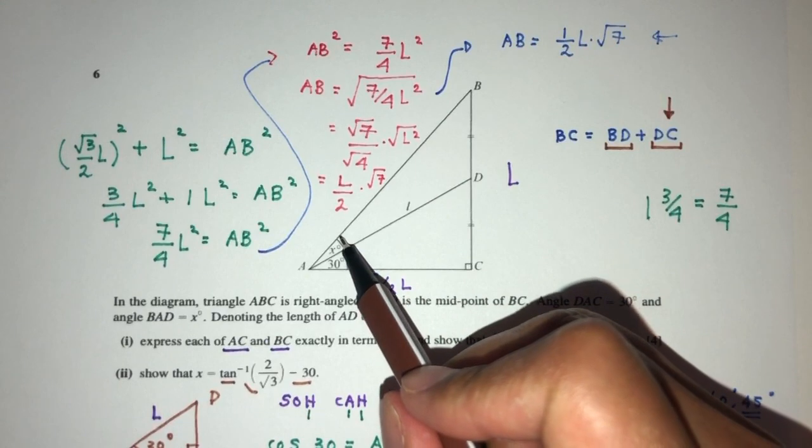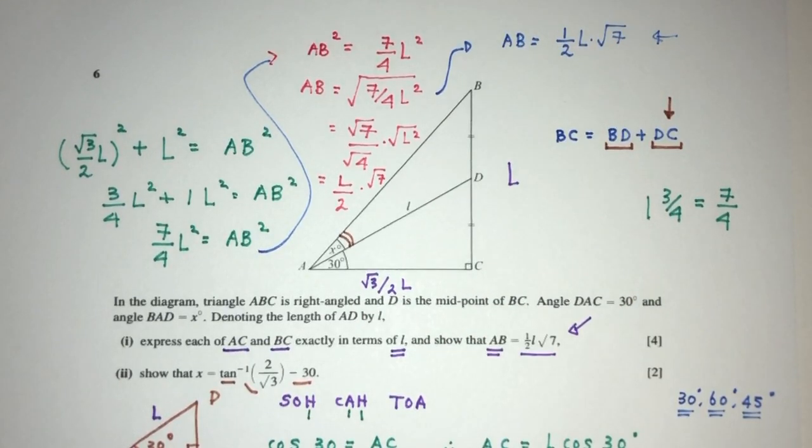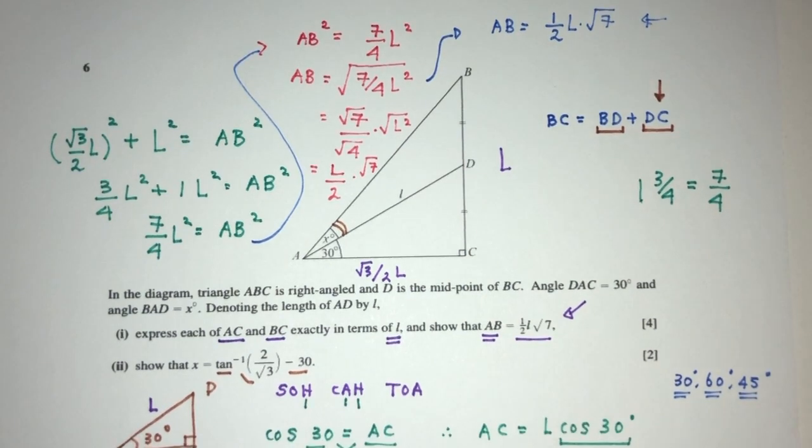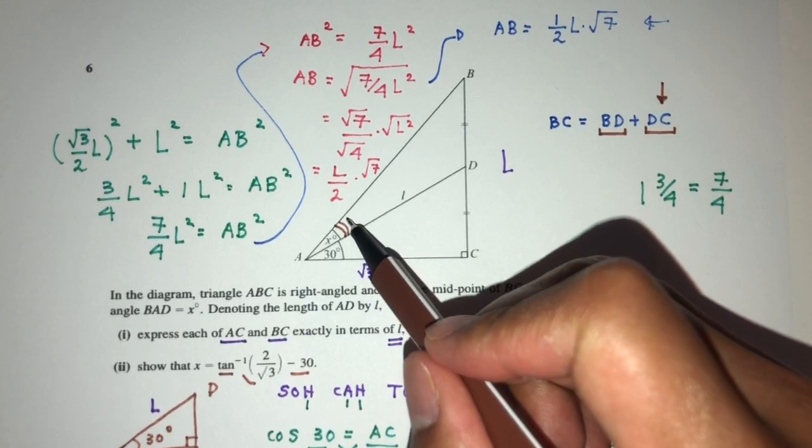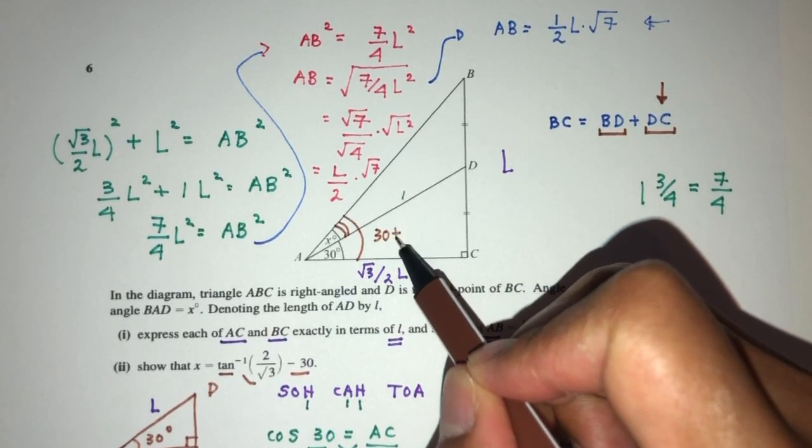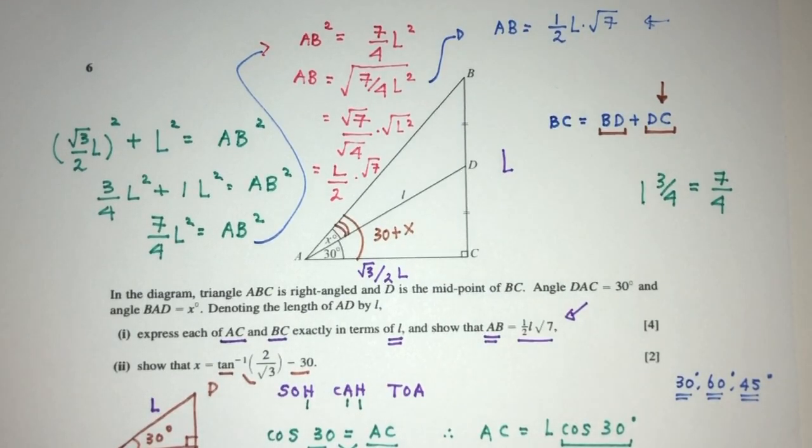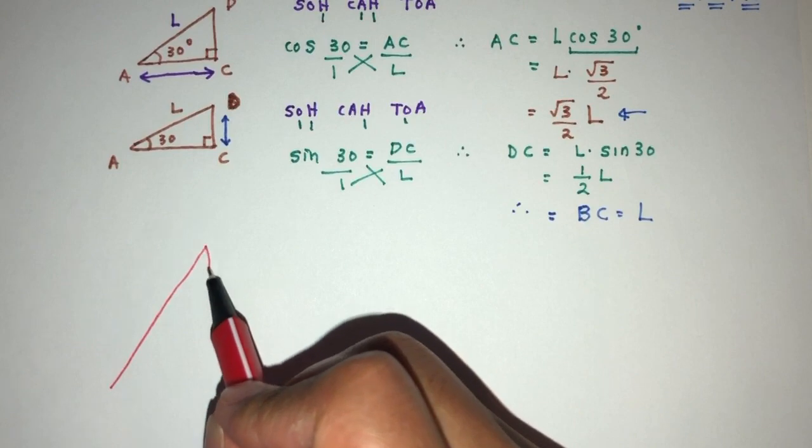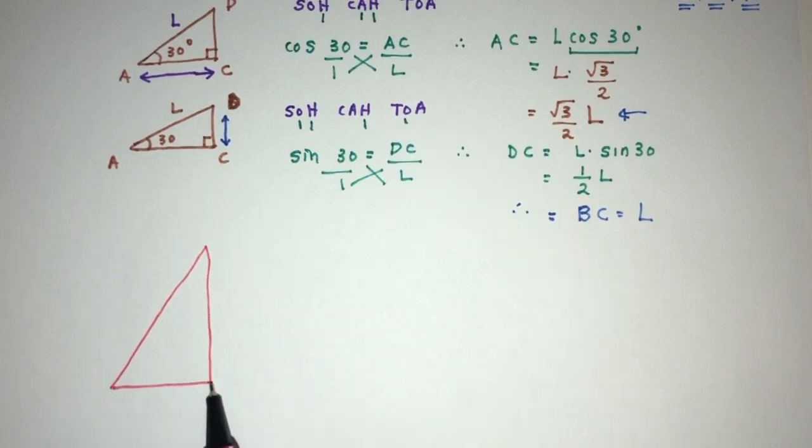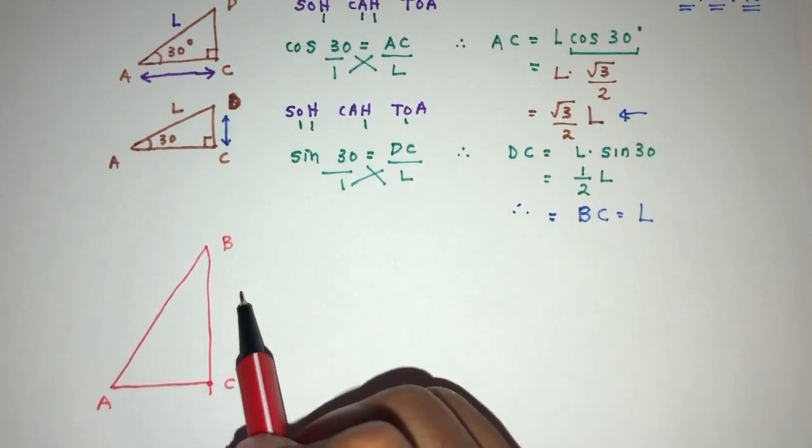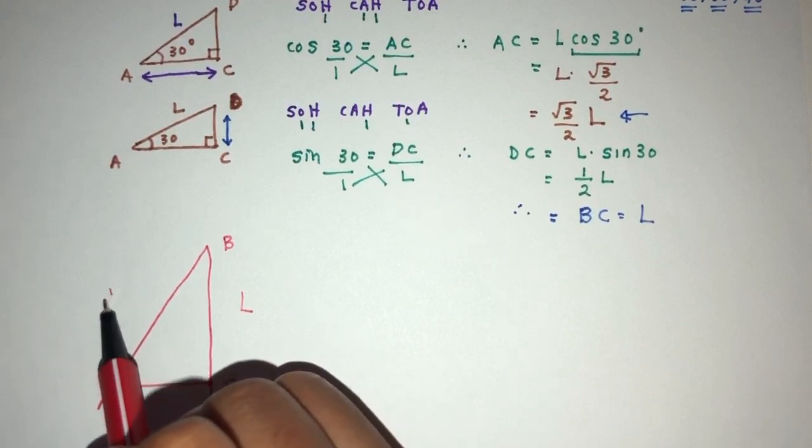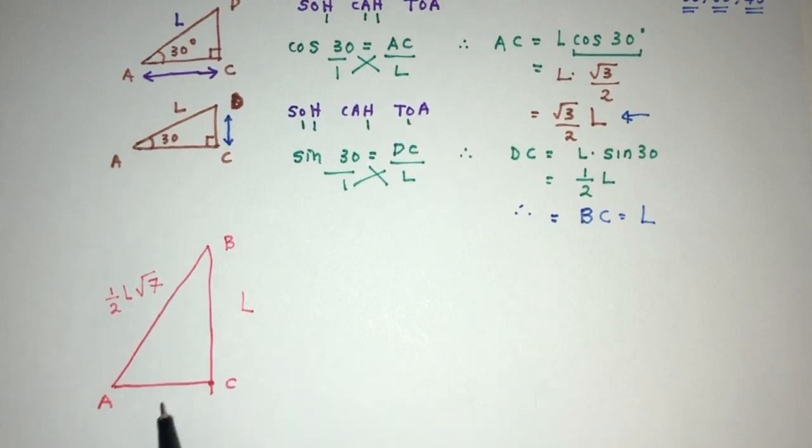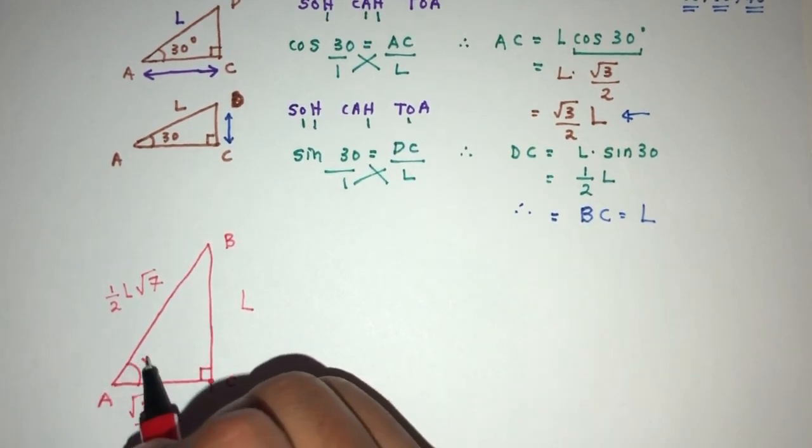Where's x? X is right here. We can use a few methods. We have to realize that if you add those two angles, the big one will be 30 plus x. Now if you take the whole triangle ABC, we have A, B, and C. This was found to be L, this was half L root 7, and this was root 3 over 2 L. This is 90 degrees, and this whole angle is x plus 30.